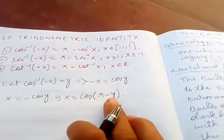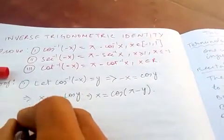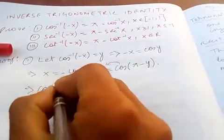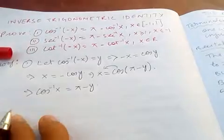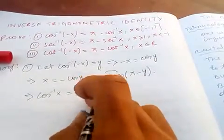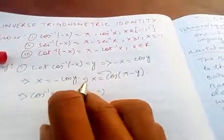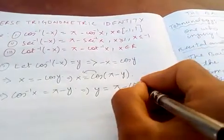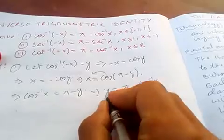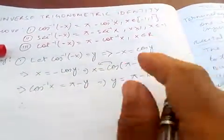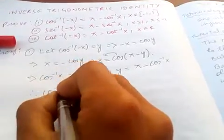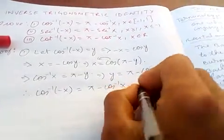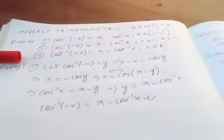So transferring, we get cos inverse of x equals pi minus y. Simplifying, y equals pi minus cos inverse of x. Since y is cos inverse of minus x, we conclude that cos inverse of minus x equals pi minus cos inverse of x. This completes the first part. Now for the second part.